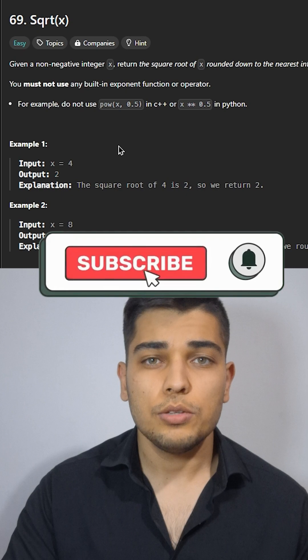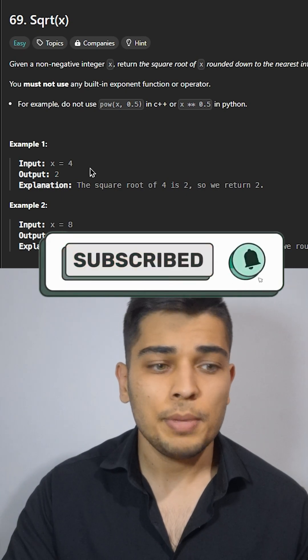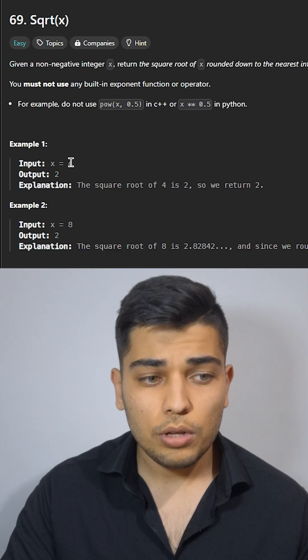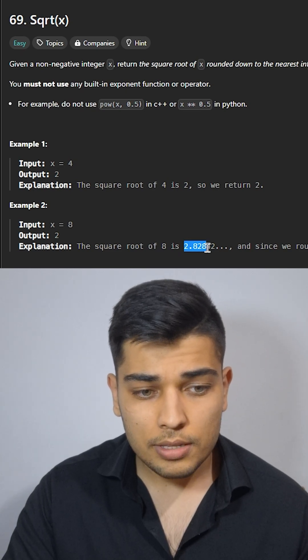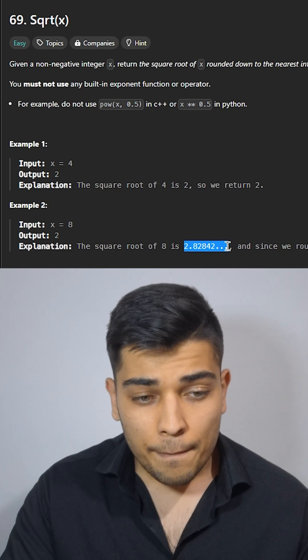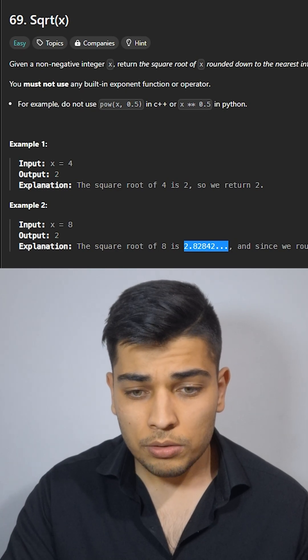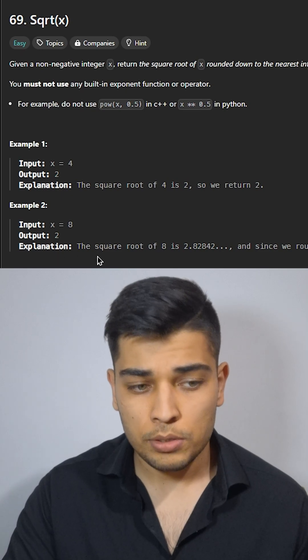I'm sure most of you know how the square root works, but let's see some examples. For example, square root of 4 is 2, but the square root of 8 is 2.8 and so on. But we should round it down to 2, so the output must be 2.